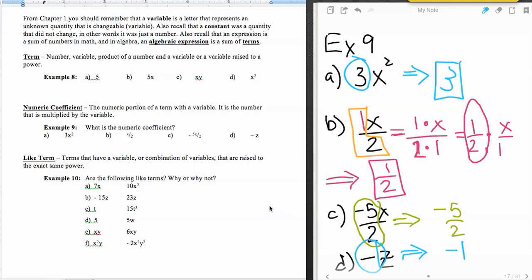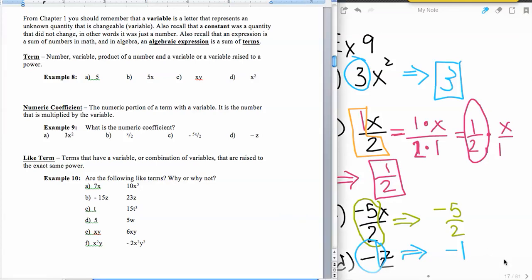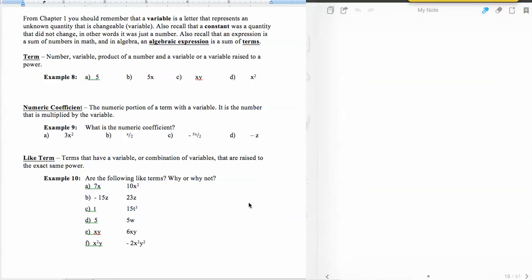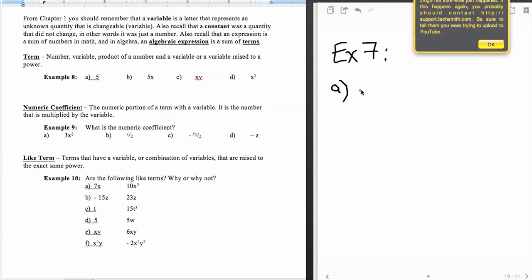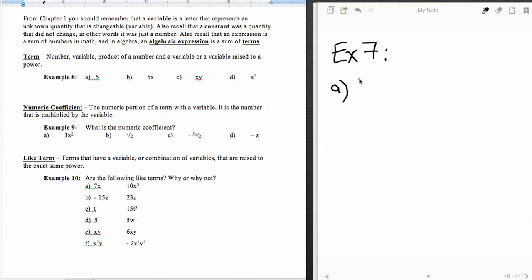Now the next concept is like terms. Let's take a look at the following terms and see if they're alike or not. In part A, two terms are alike if their variable portions are exactly the same. You probably should pause and see if you can do this without my assistance, then come back and check yourself. All right. Part A, we see X and X squared.